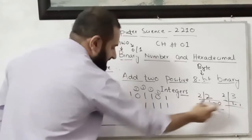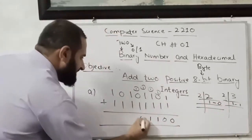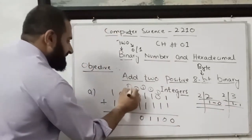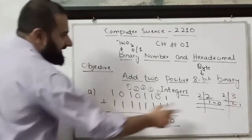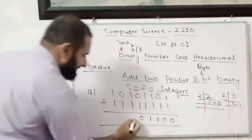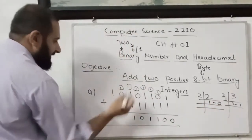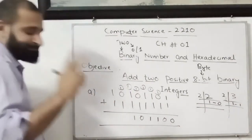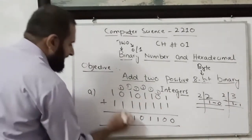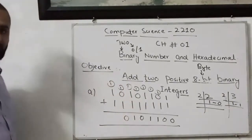So 1 plus 1 is 2. Remainder I will write over here - remainder is 0. And then 1 will go as a carry. Then again it's 3, and the remainder will come over here and the carry will go over here. Again 1 plus 1 is 2. 2 means that 0 comes over here and 1 will go over here.